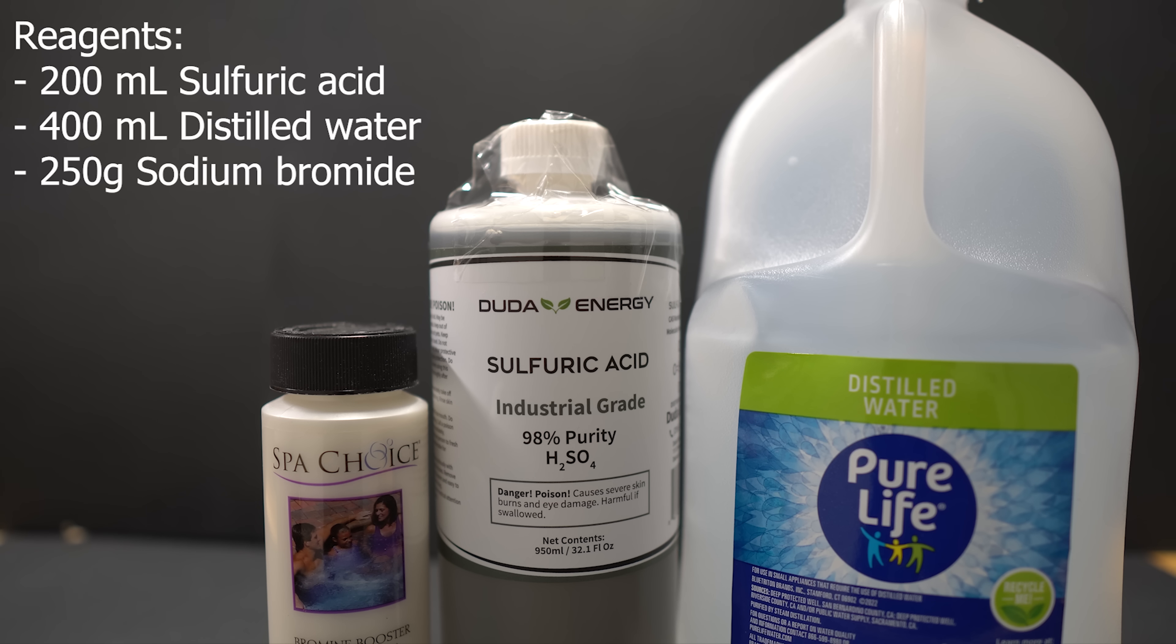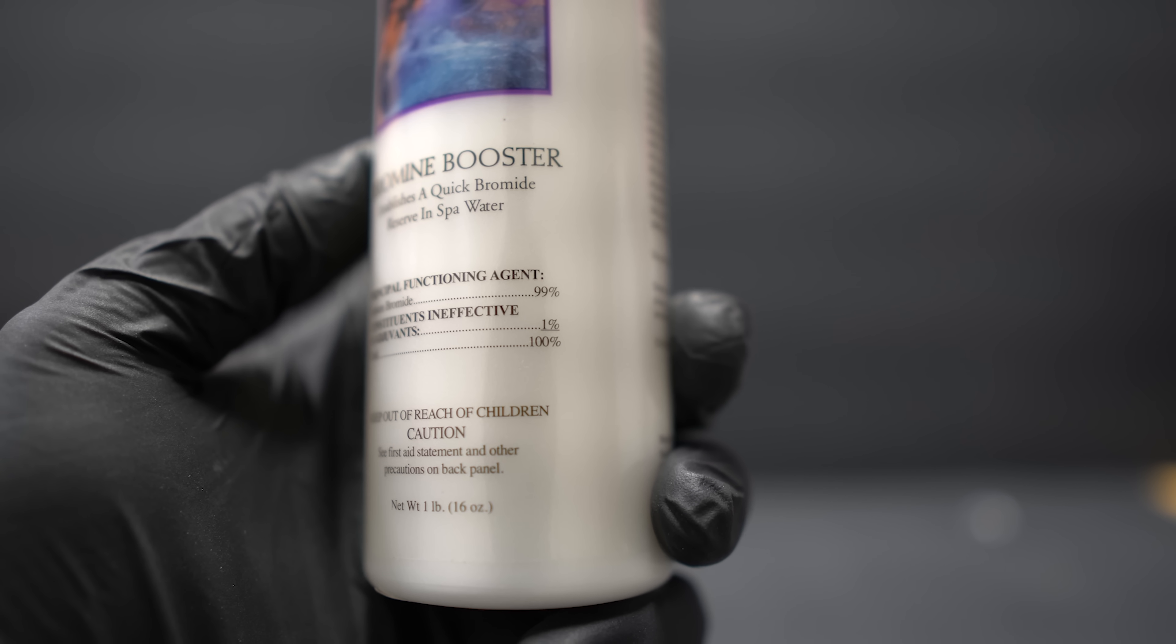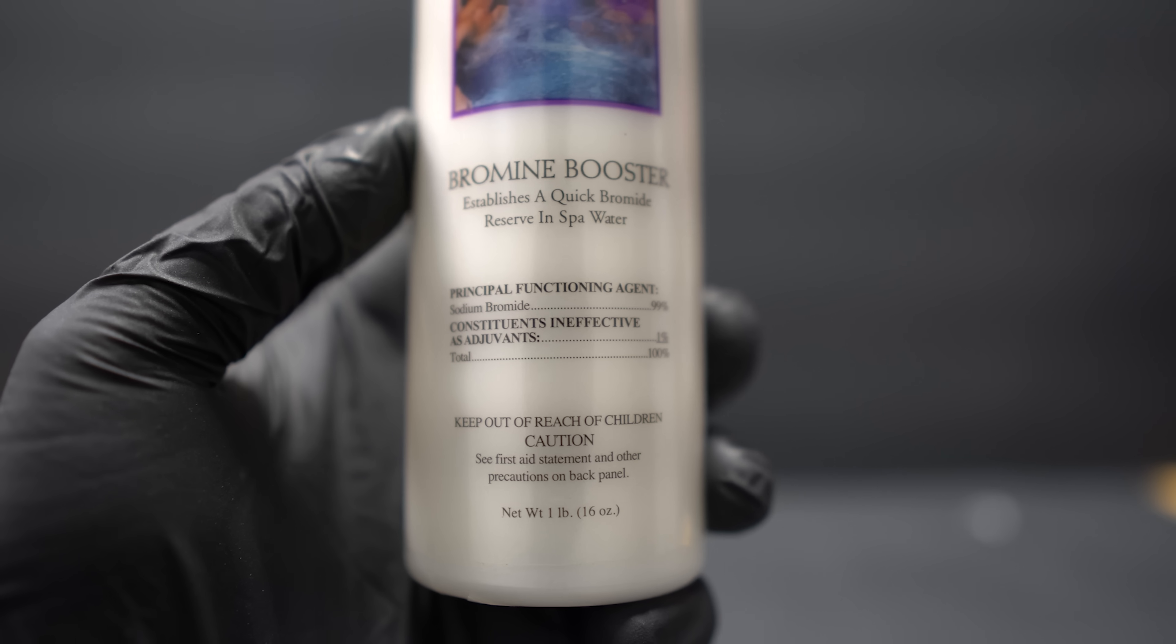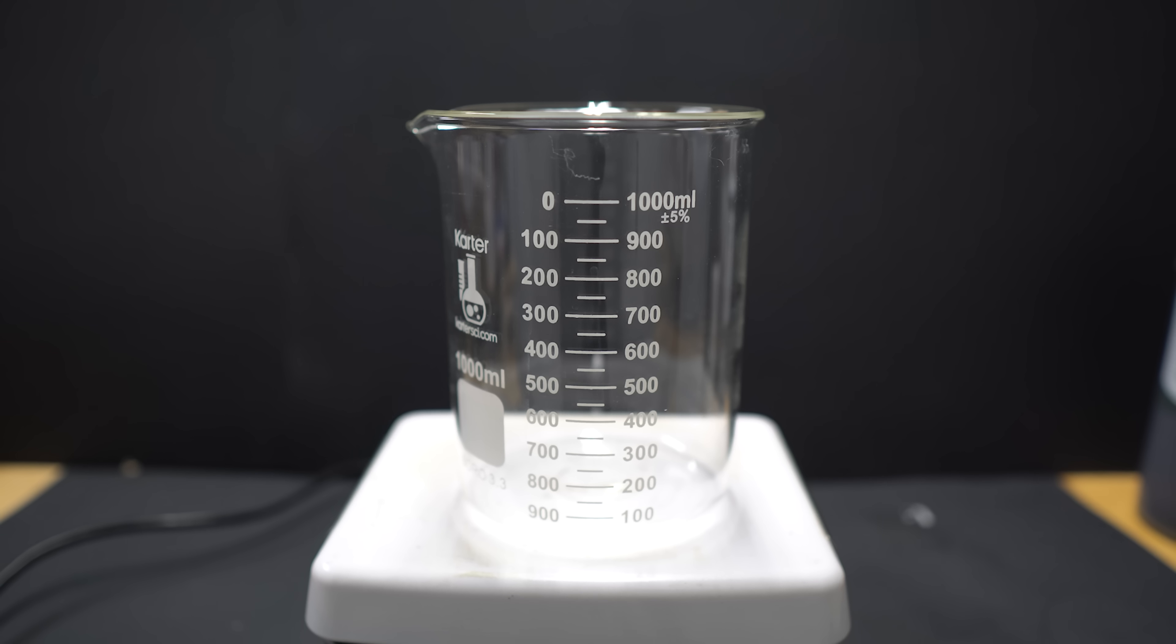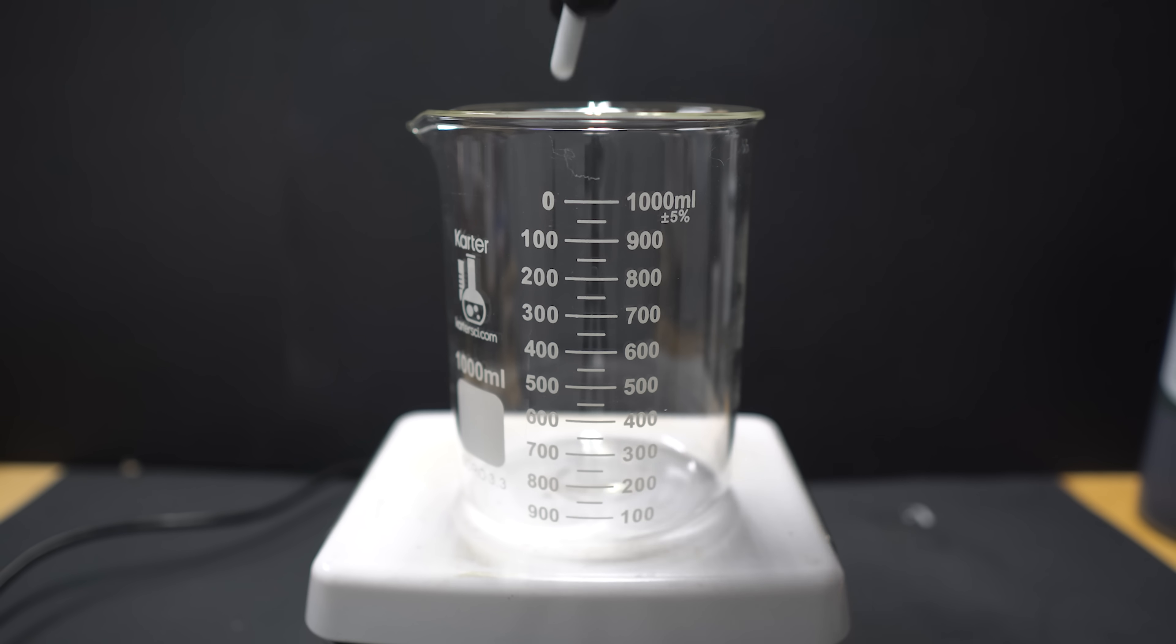Anyway, you're going to need sulfuric acid, distilled water, and sodium bromide. Sodium bromide can be bought as a spa supplement, usually to boost the bromine in the water, and it's pretty readily available online.